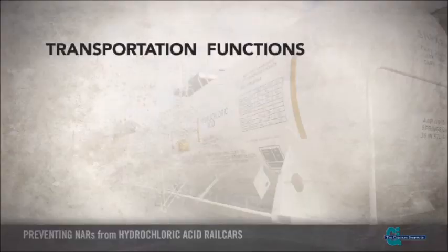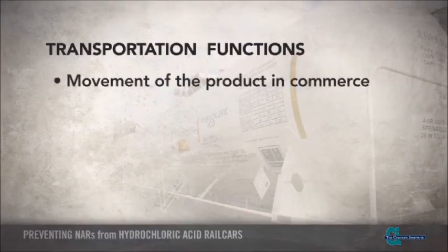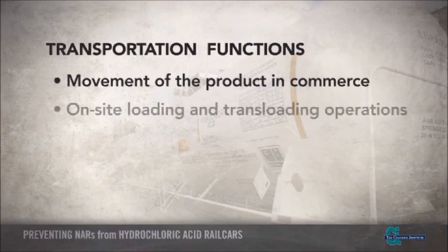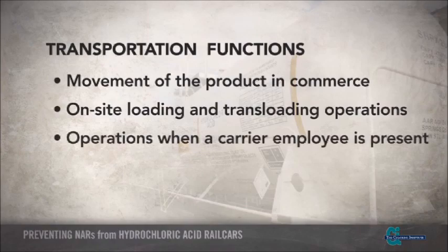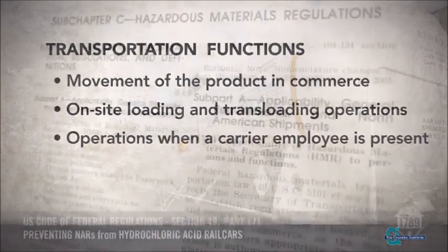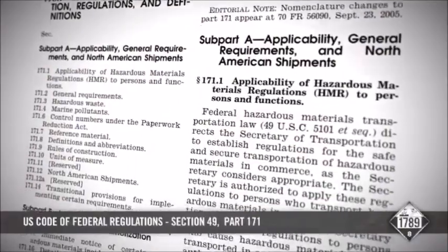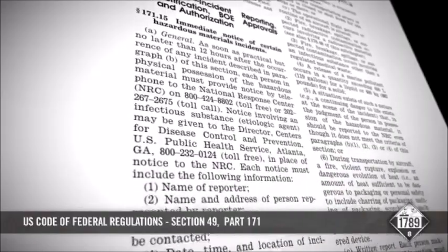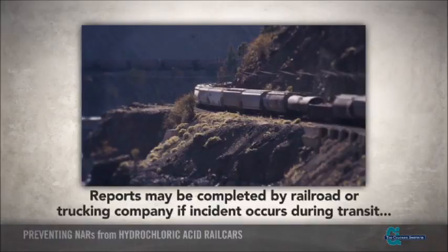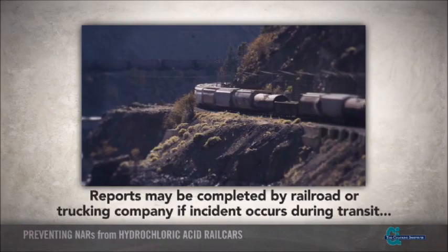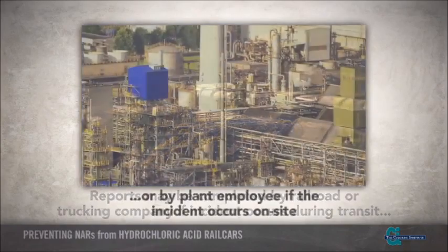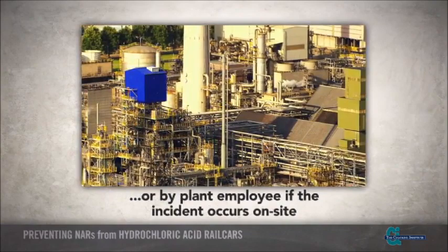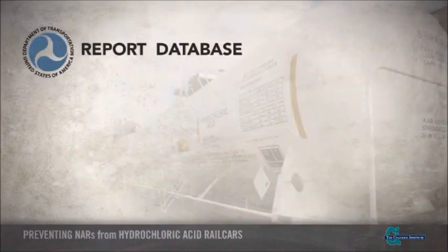Transportation functions include, but are not limited to, the transportation or movement of the product in commerce, as well as on-site loading and trans-loading operations when a carrier employee is present. See Section 49 of the U.S. Code of Federal Regulations, or 49 CFR Part 171, for more details on reporting requirements. These reports may be completed by the railroad or trucking company while the package is in transit, or by a plant employee if the incident is on site.